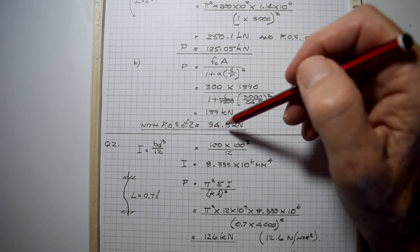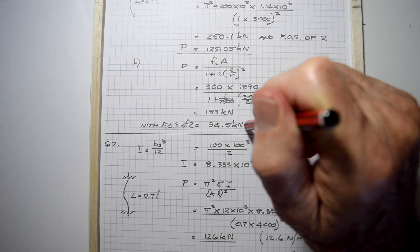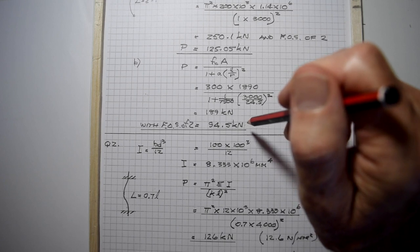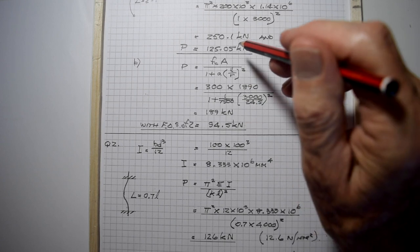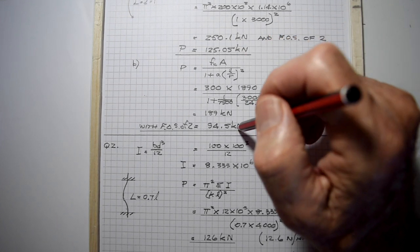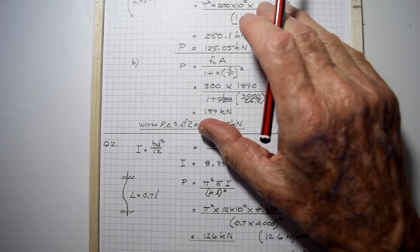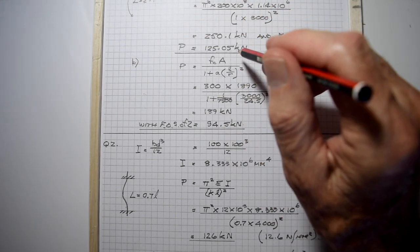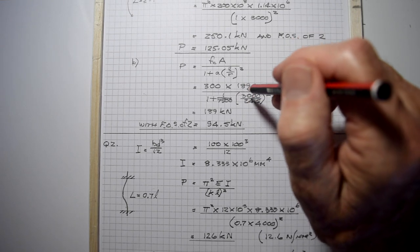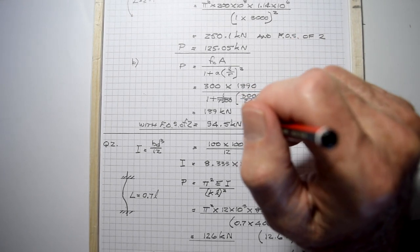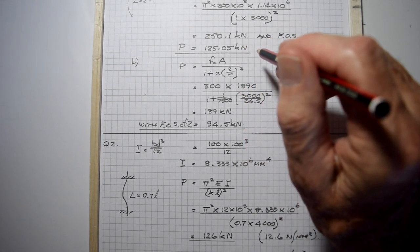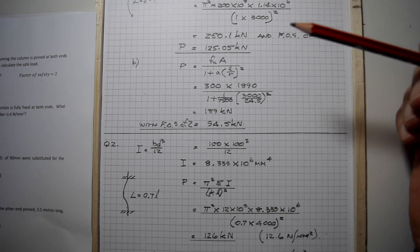With a factor of safety of two, we get a safe load of 94.5 kilonewtons according to Rankin-Perry-Robertson, and 125 according to Euler. This illustrates the difference between a purely mathematical solution and allowing for some initial bending in the strut.